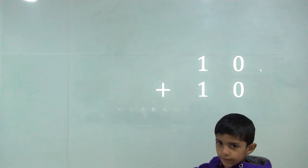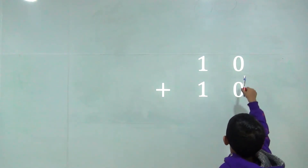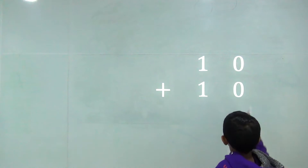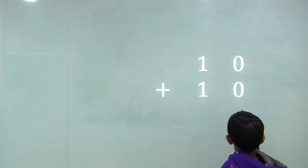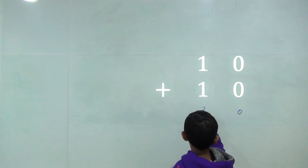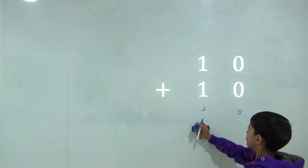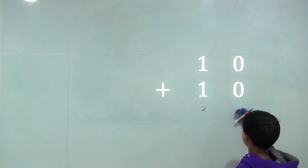Now we will do two doubles. Zero plus zero is equal zero and one plus one is equal two. So the answer would be twenty.